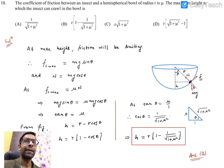Hello everyone, let's consider this tenth problem. The coefficient of friction between an insect and a hemispherical bowl of radius r is mu. What is the maximum height which the insect can crawl in the bowl? So it's a bowl with radius r.